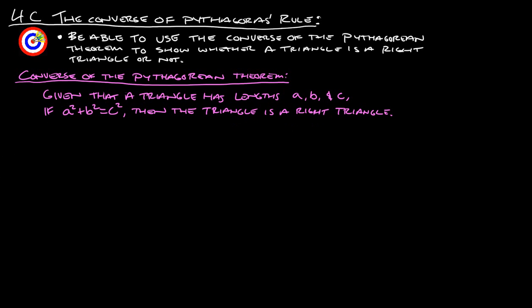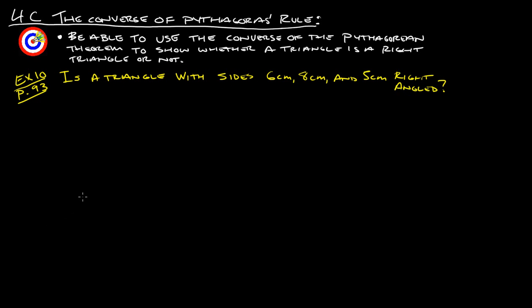Alright, so let's take a look at an example. Example 10 from page 93 says, is a triangle with sides 6, 8, and 5 centimeters right angled?